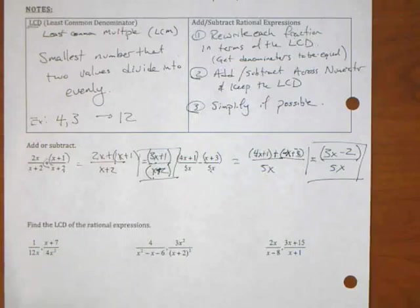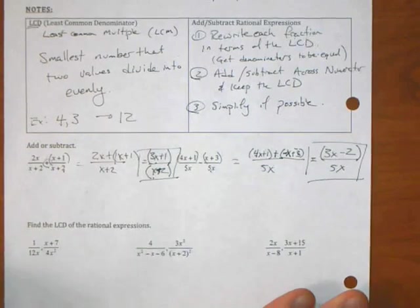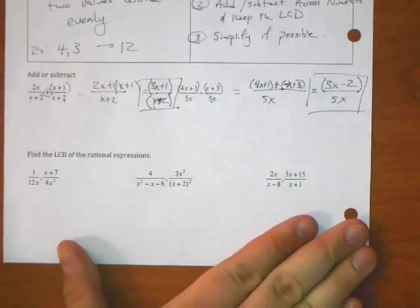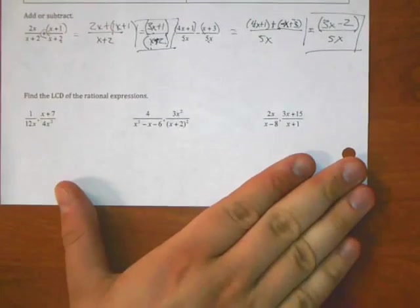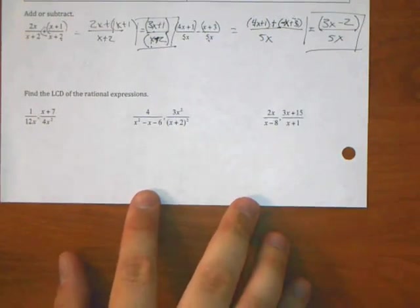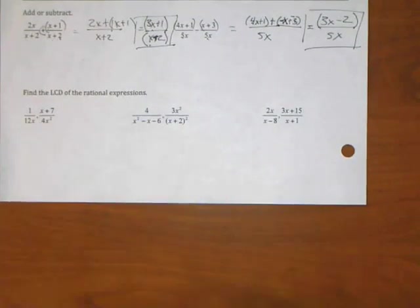Okay, those are the easy ones. The new ones we're going to do is what if they don't have the same denominator?